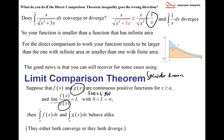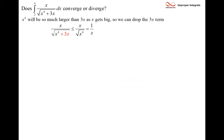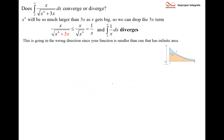They either both converge or they both diverge — that's the limit comparison theorem. There are two other parts to it if you look it up, a part B and a part C, but we're focusing on part A where the limit is a finite constant. Also note: the limit comparison test is for series; the limit comparison theorem is for integrals. Now let's go back to the example where we couldn't use direct comparison. We have our 1/x and our original function.